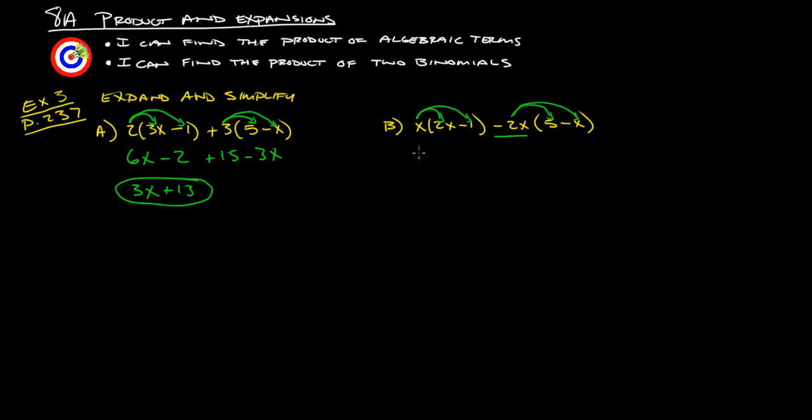So, x times 2x is 2x squared. x times negative 1 is negative x. Negative 2x times 5 is negative 10x. Negative 2x times negative x. Negative times negative is positive. 2 times 1 is 2. x times x is x squared. So we take 2x squared and 2x squared gives us 4x squared. Negative x and negative 10x is negative 11x.